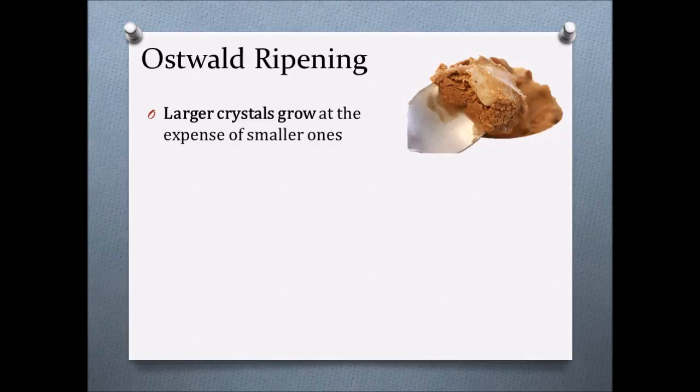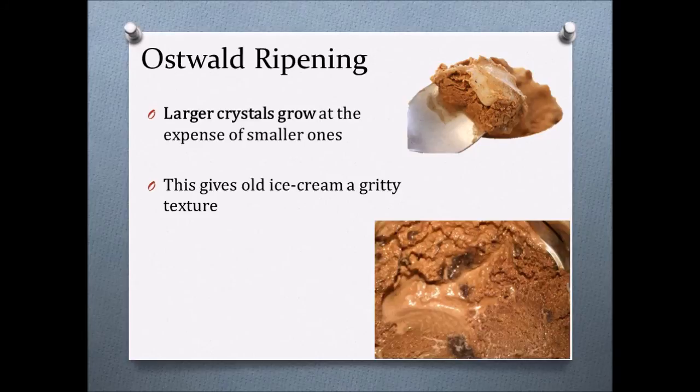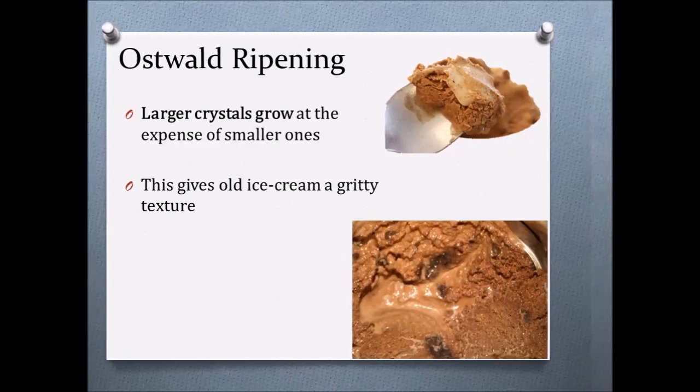known as Oswald ripening, where large crystals will grow at the expense of smaller ones. This process could be seen in ice cream. Ice cream left in the freezer will become hard as large crystals grow bigger, giving ice cream a gritty texture.